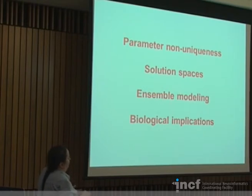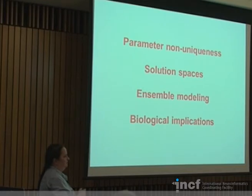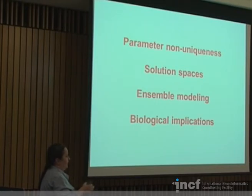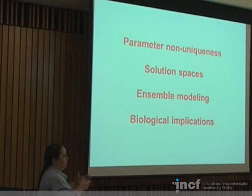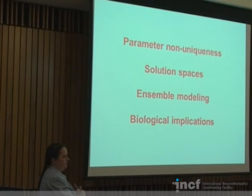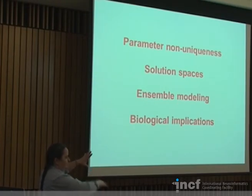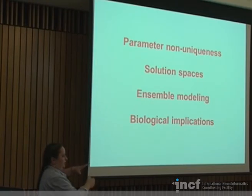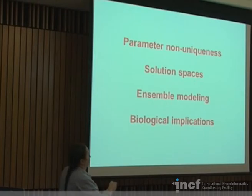This term isn't unique to neuroscience — any complex system, biological or otherwise, probably has this property that different parameter combinations can do the same thing. People who model metabolic pathways do something similar: they know the starting substrates and end product, but there are different chemical pathways that could lead from X to Y, and without complete knowledge of which pathway is actually in place in the cell, they examine all possible pathways and call it an ensemble. That's where the term comes from.